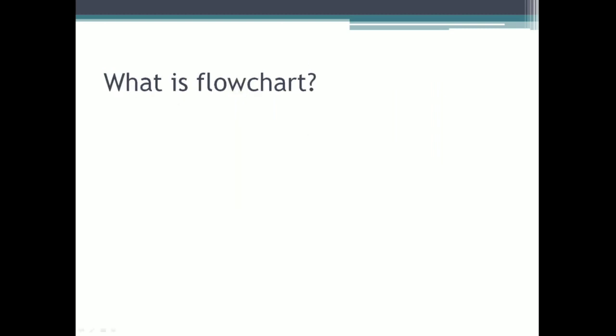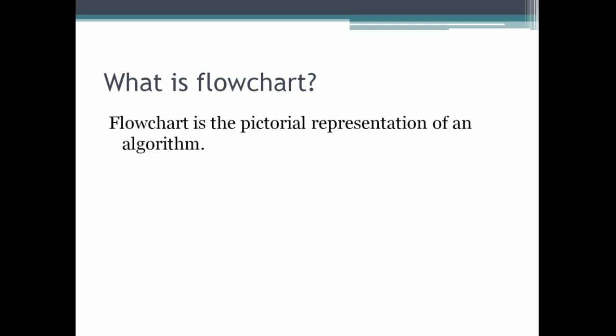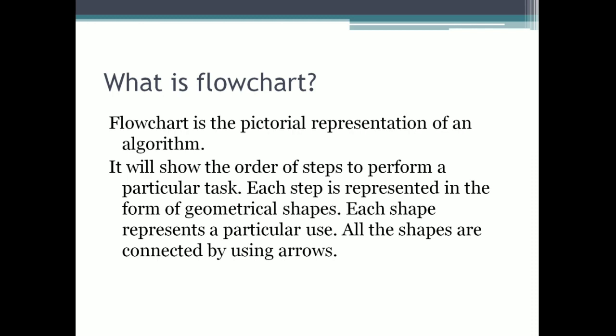Did you understand what an algorithm is? Now let's discuss about flowchart. The pictorial representation of an algorithm is called a flowchart. In a flowchart each step is represented in the form of a geometrical shape. For drawing a flowchart we can use various geometrical shapes, and each shape represents a particular use — for input, write, read, and process. All these shapes are connected using arrows which show the sequence of flow of steps in the algorithm.